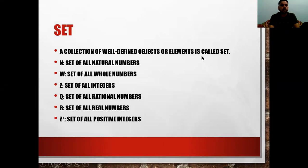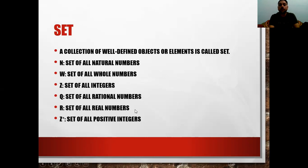In mathematics, standard sets are: N — the set of all natural numbers (counting numbers 1, 2, 3, ...); W — the set of whole numbers beginning from 0, 1, 2, 3, ...; Z — the set of all integers (all positive and negative numbers including zero); Q — the set of all rational numbers; R — the set of all real numbers; Z⁺ — the set of all positive integers; and Z⁻ — the set of all negative integers.